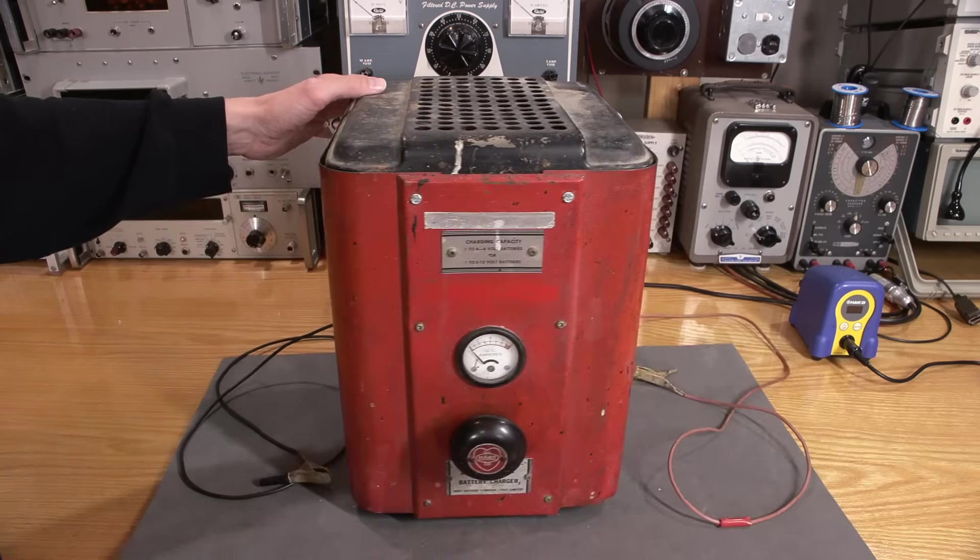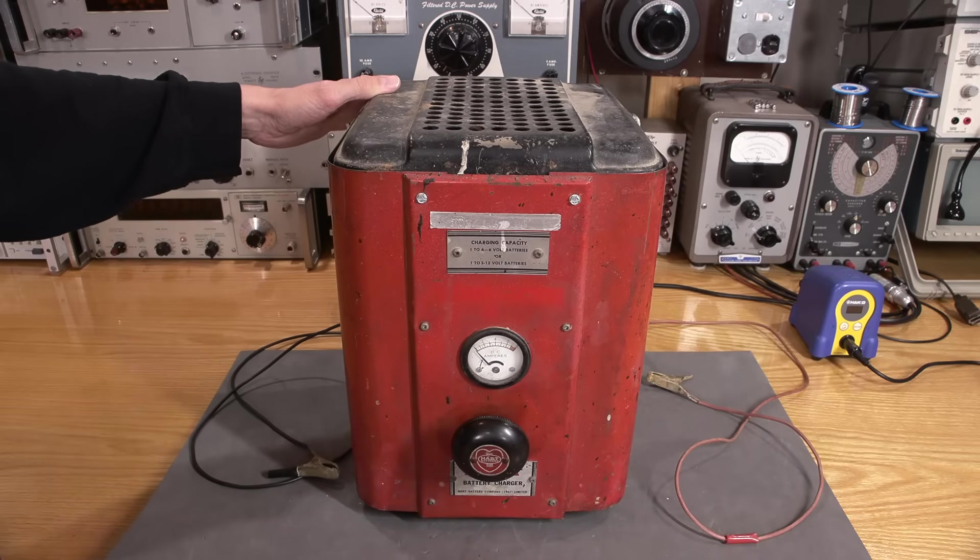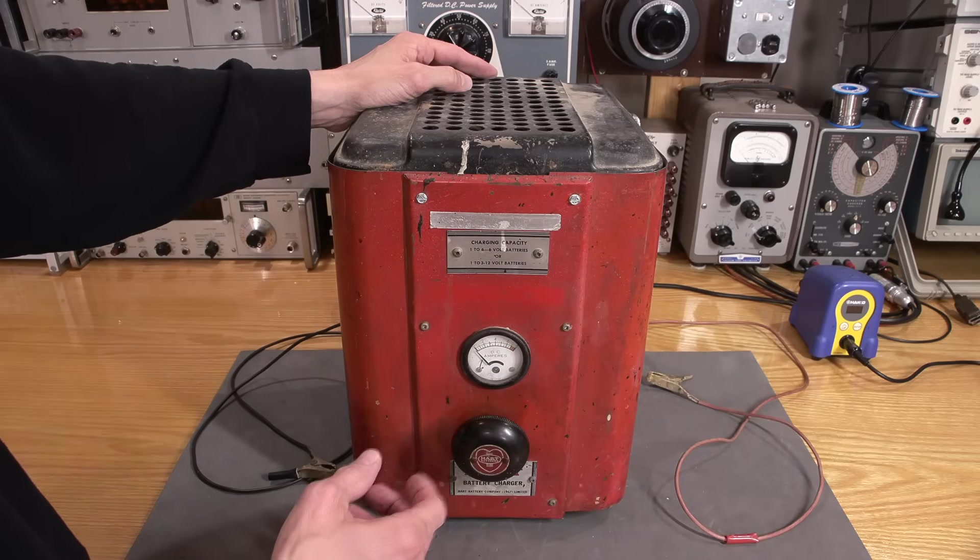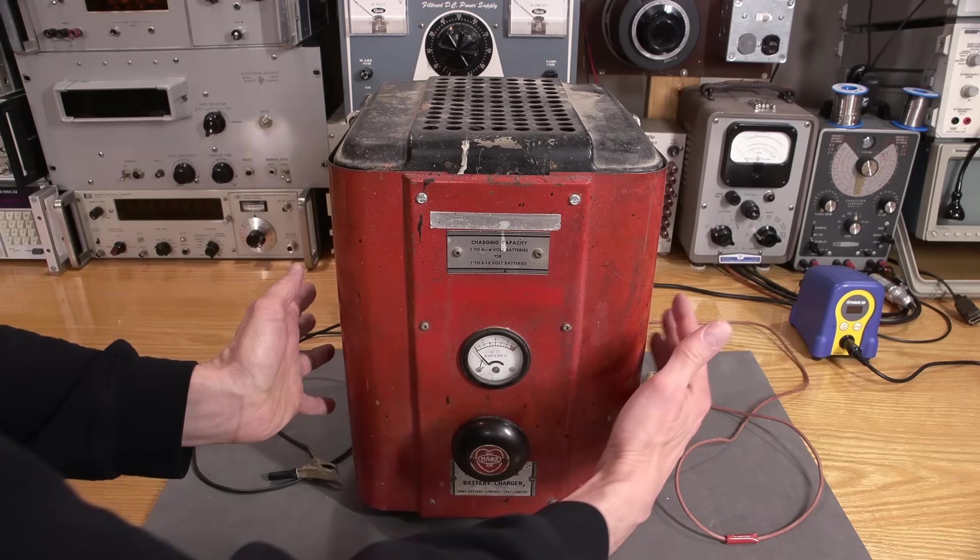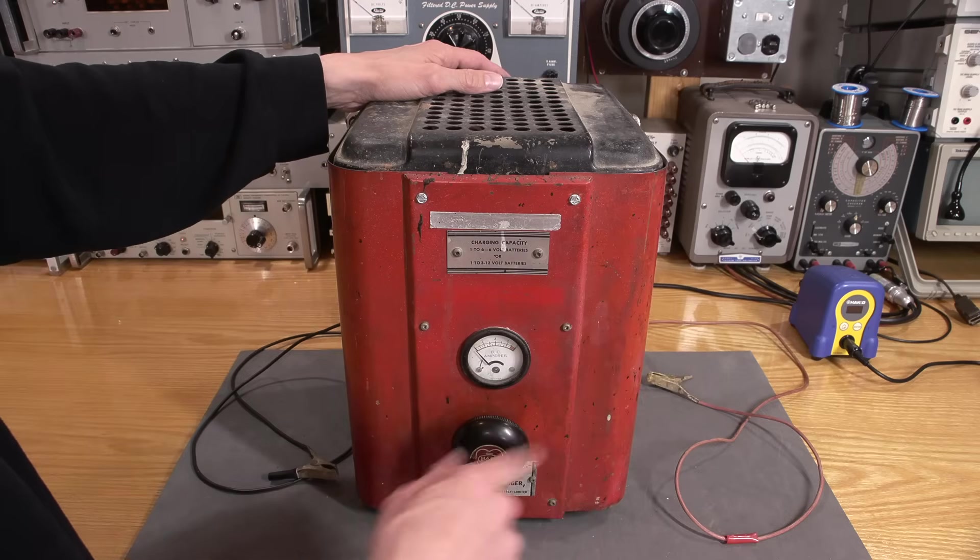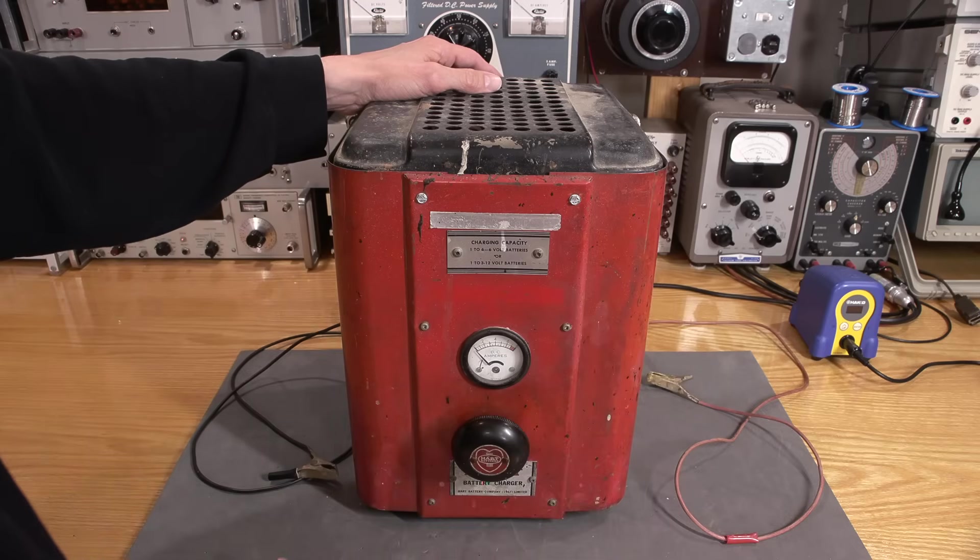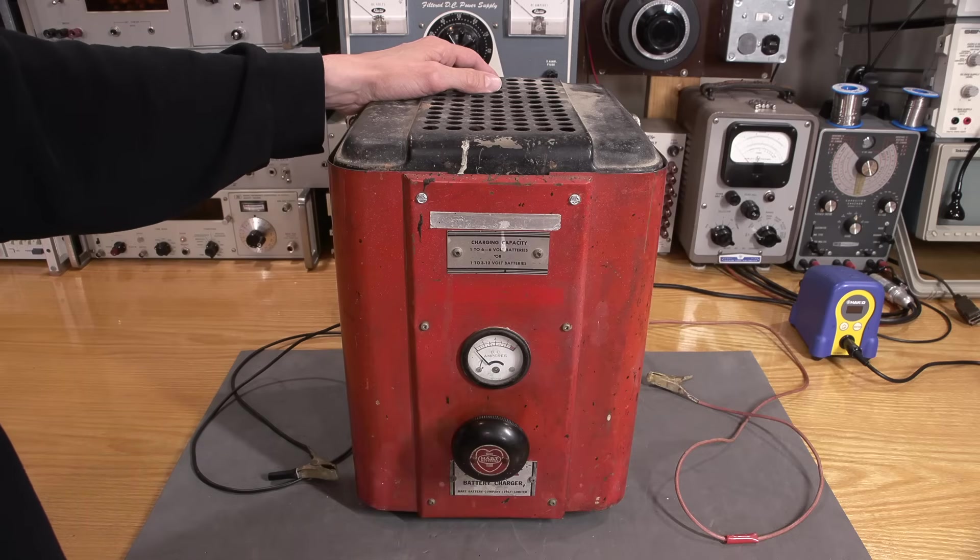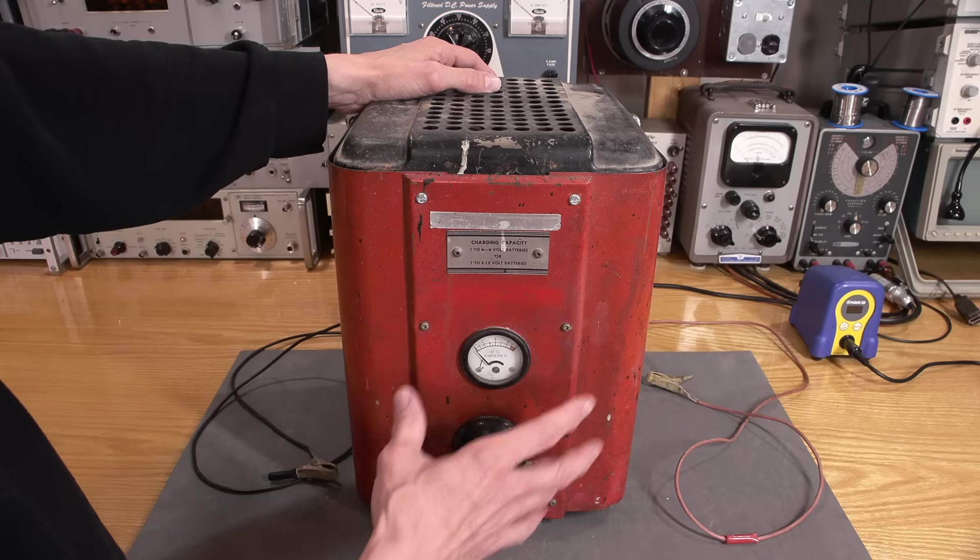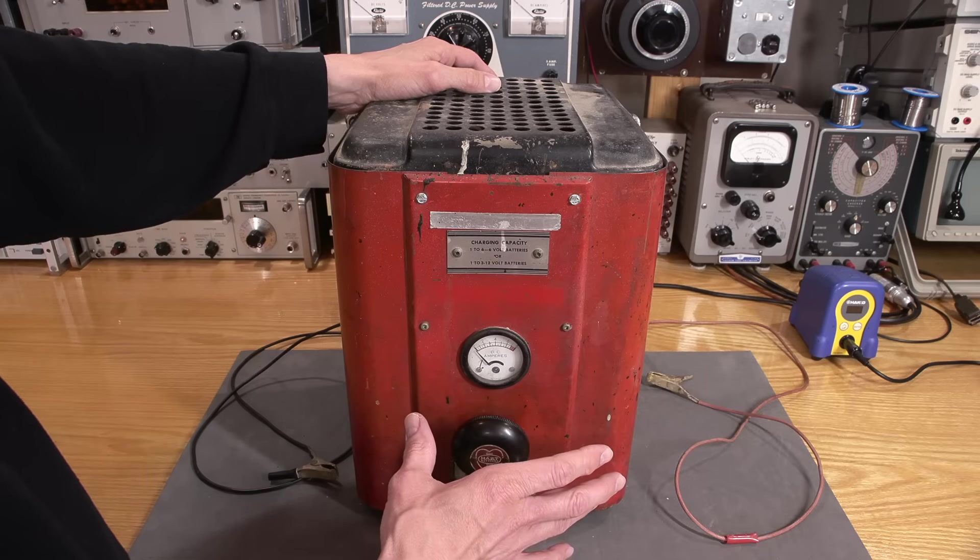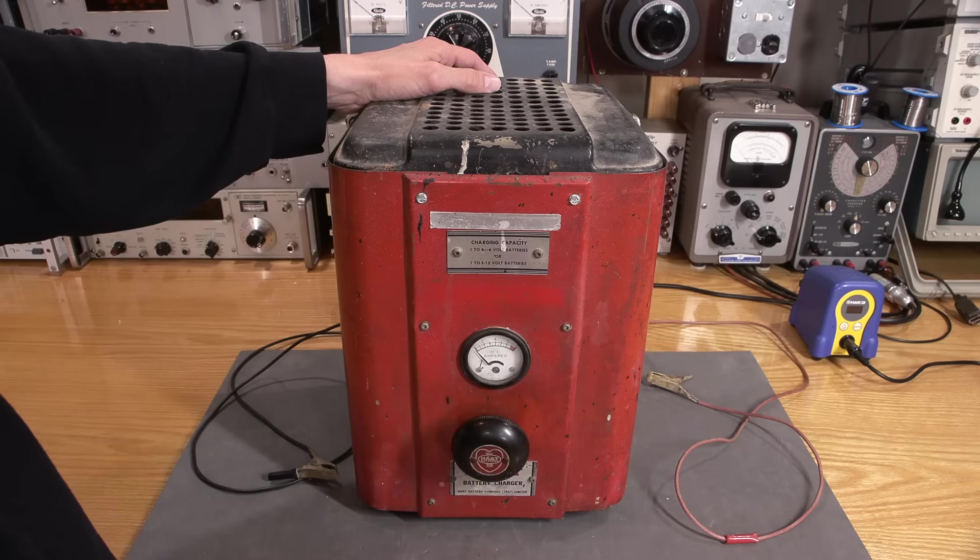Chances are the fix is going to be very simple. This thing has a bulb inside that's much like a light bulb, and that light bulb takes the alternating current that this charger makes and changes it into direct current so that this thing will charge batteries. That bulb inside is much like an old incandescent filament style light bulb. Imagine a light bulb glowing from the 50s until just recently.